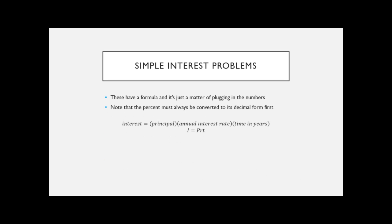Simple interest problems fall under percentage problems because there's an interest rate, which is a percentage. There's a formula: interest equals the principal (your starting amount) times the interest rate times the number of years — I equals PRT. When you use this formula, you must convert your percent to decimal form. The problem will usually say 'simple interest,' so you'll know to use this formula and plug in what you know.